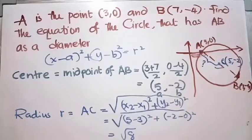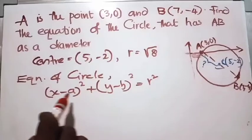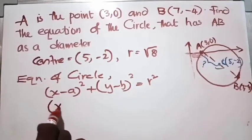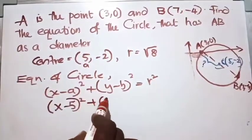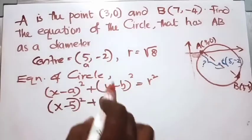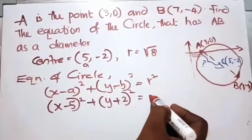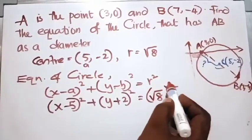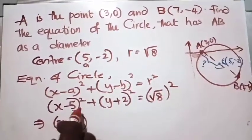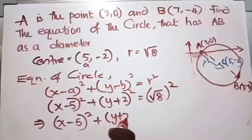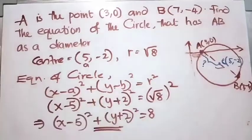So the radius is root 8 and the center is (5, minus 2). Now let's write the equation of the circle: (x minus 5) squared plus (y minus (minus 2)) squared equals (root 8) squared, which gives us (x minus 5) squared plus (y plus 2) squared equals 8 as the equation of the circle.